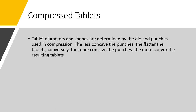In compressed tablets, tablet diameters and shapes are determined by the die and the punches in compression. The less concave the punches, the flatter the tablets. Conversely, the more concave the punches, the more convex the resulting tablets.